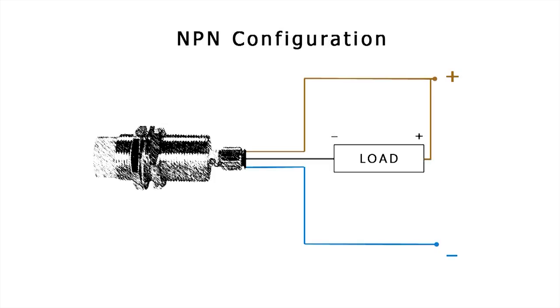For NPN connections, the output wire will now connect to the load's common and the wire connected to the positive side of the power supply will need to be electrically connected to the positive side of the load.